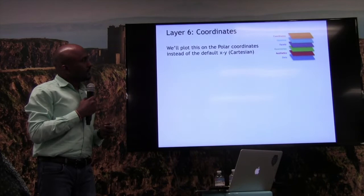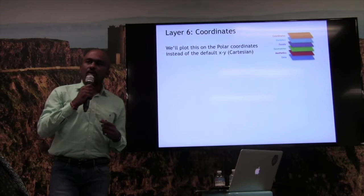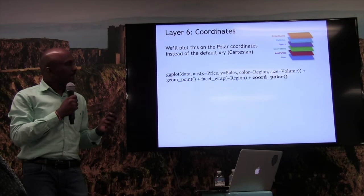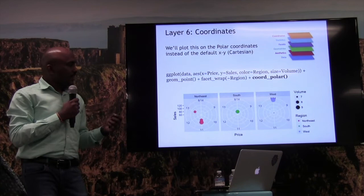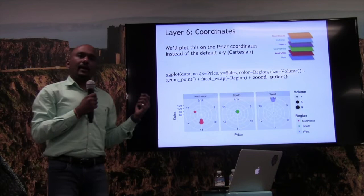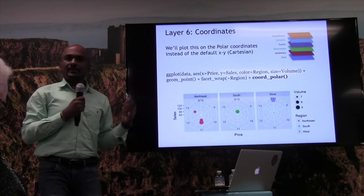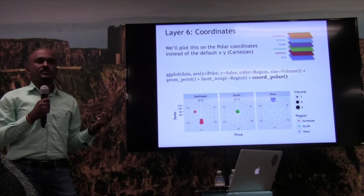Layer 6 is coordinates. So far we've been plotting everything in an XY coordinate, also called Cartesian coordinate. At times it will be useful to change this into a circular plot using polar coordinates. We just add 'coord_polar' and it transforms our plot — the three side-by-side facets change into circular plots for each of the three regions, similar to a radar or spider chart. For our data this is not very useful, so we revert back to Cartesian coordinates by removing the command — ggplot defaults to Cartesian if none is specified.